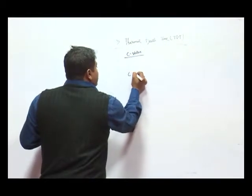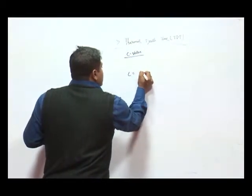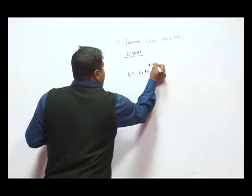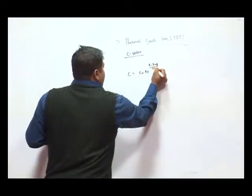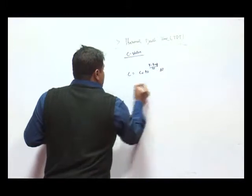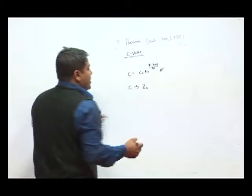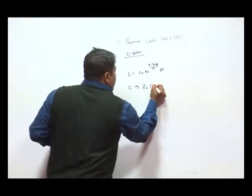And this is similarly represented as C equal to C naught into 10 to the power T minus T difference upon Z into del T. So C depends on the Z C, that is the Cook dependence value.